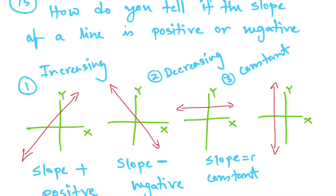In graph number three the slope is equal to zero because the line is not increasing or decreasing. In the last graph, if you have a vertical line, the slope will be undefined.